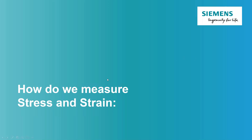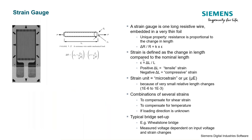Let's talk about how we measure stress and strain. A typical instrument to measure strain is a strain gauge. Measuring stress directly is very difficult, so typically what we do is measure the strain and then use Young's modulus to convert that strain into a stress.